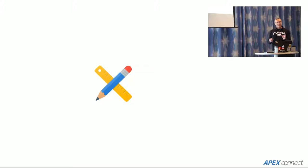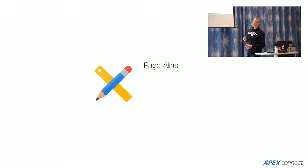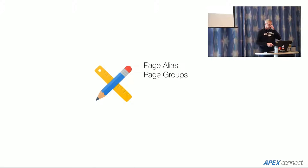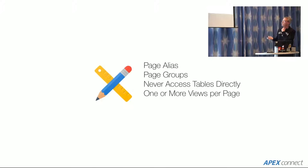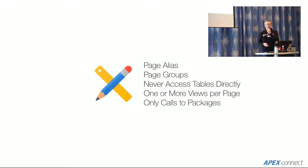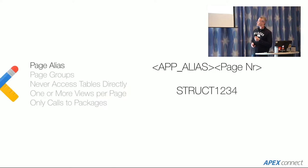On the Apex side of things, what I normally do is use page aliases heavily, as well as page groups. I never access the table directly — I'm going to use one or more views per page, and only packages. That's it.